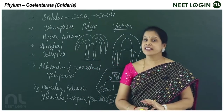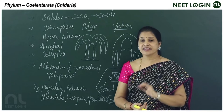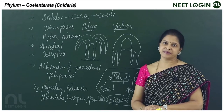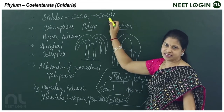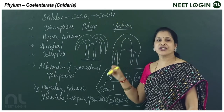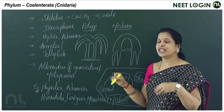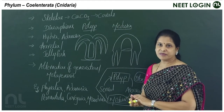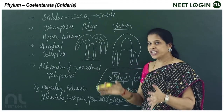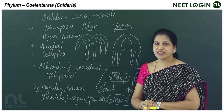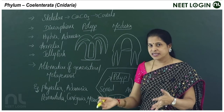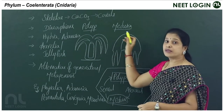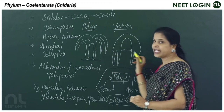In some cnidarians, the skeleton is made up of calcium carbonate — a calcareous skeleton. Corals are a good example; their skeletons are used as semi-precious stones in ornaments. A very unique feature of the phylum Cnidaria is dimorphism — they exist in two forms: the polyp stage and the medusa stage.